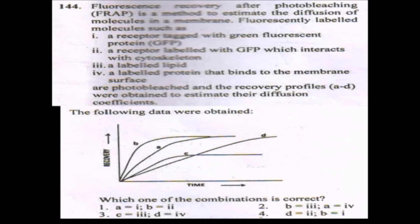Second point: a receptor labeled with GFP which interacts with cytoskeleton. If a receptor interacts with cytoskeleton, the cytoskeleton will hold that receptor in position and decrease its movement.